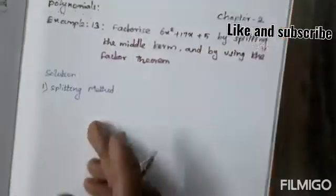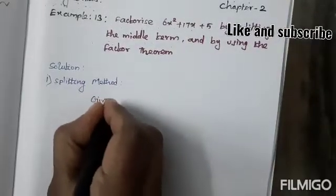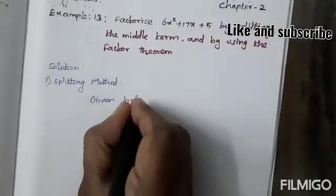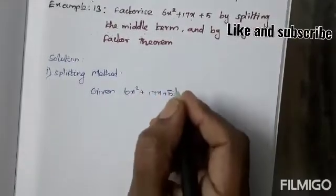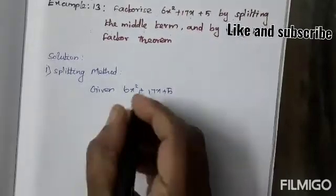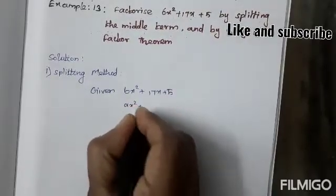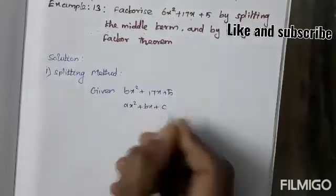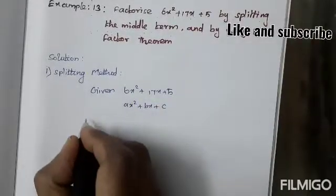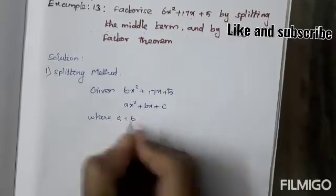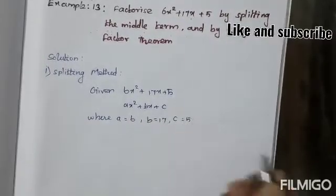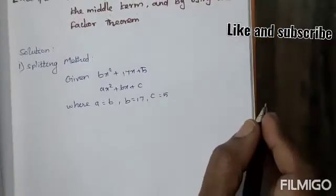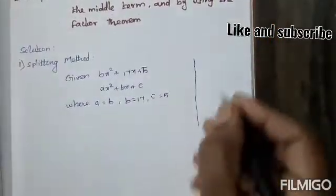Give a polynomial: 6x² + 17x + 5. This is a polynomial of the form ax² + bx + c. Here a = 6, b = 17, c = 5. We need p and q such that p × q = a × c and p + q = b.